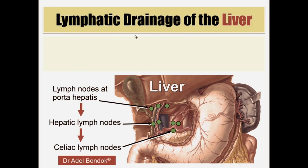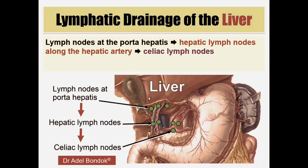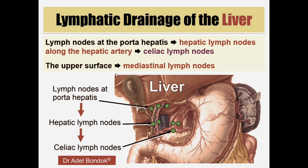Regarding lymph drainage of the liver: the liver is supplied by the hepatic artery. Lymphatics from the liver go to the lymph nodes at the porta hepatis, then along the hepatic artery to the hepatic lymph nodes, and finally to the celiac lymph nodes. However, the upper surface of the liver drains into the mediastinal lymph nodes.